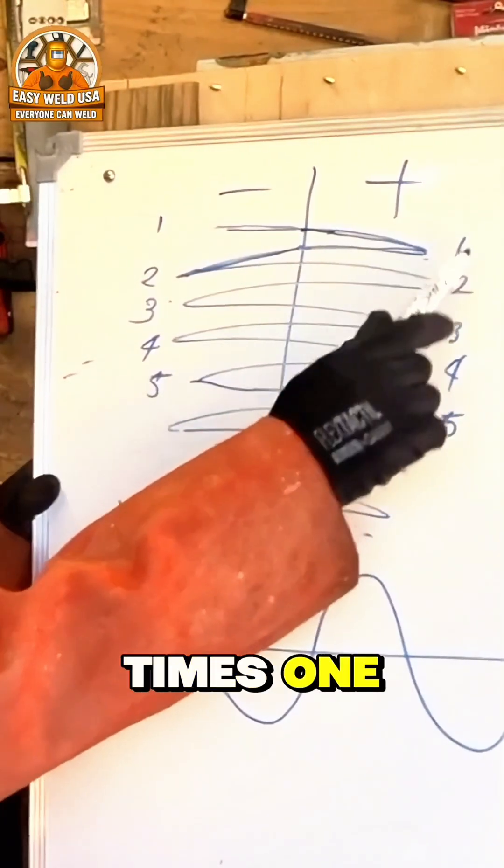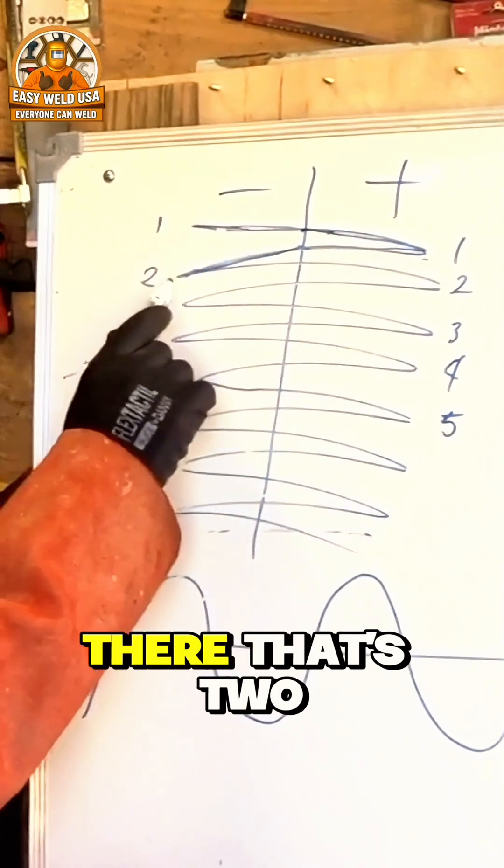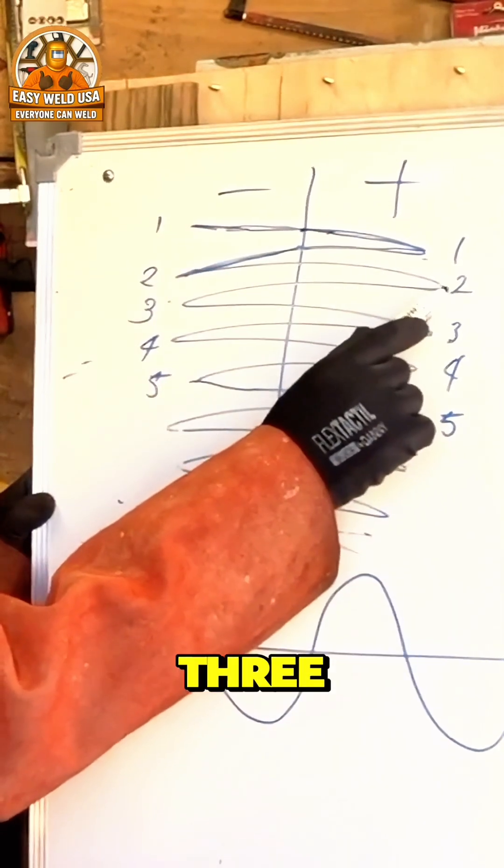It did it a few times, one. Then it came back here. That's two already, because it started here, now it's here. Then it goes there, that's two already, right here.